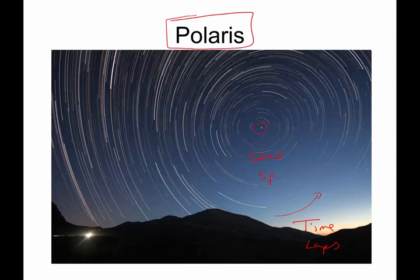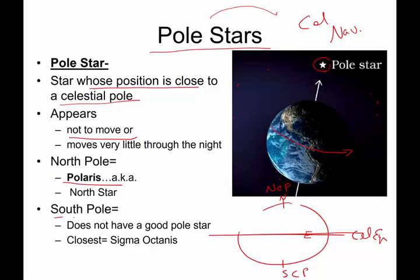Because it stays in the same spot in the sky, historically by native peoples and sailors and ancient folks, it was definitely used as a means of navigation. Now, the southern hemisphere does not have a good pole star. The closest one is called Sigma Octanus. They currently do not have a good pole star. This pole star does change with time.